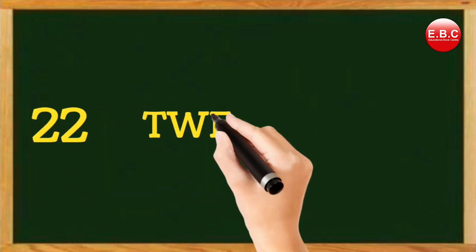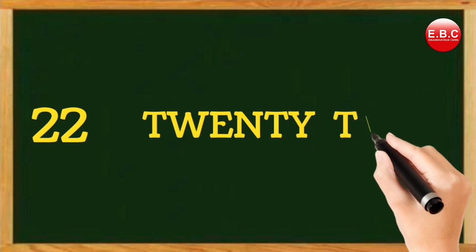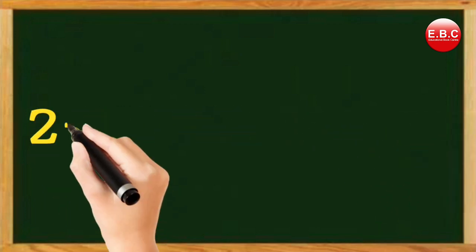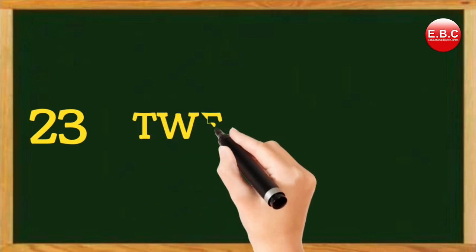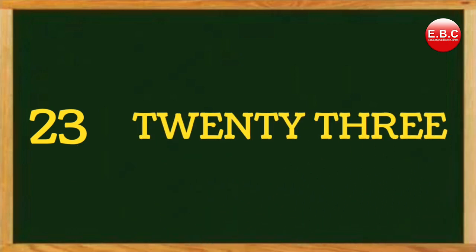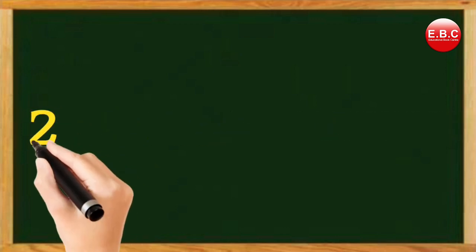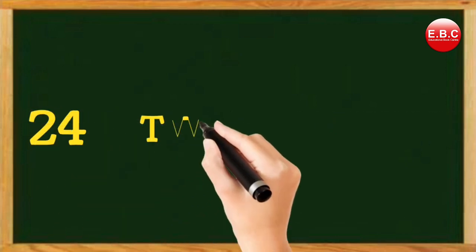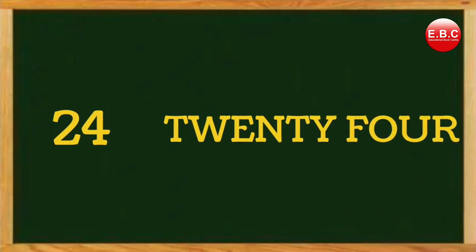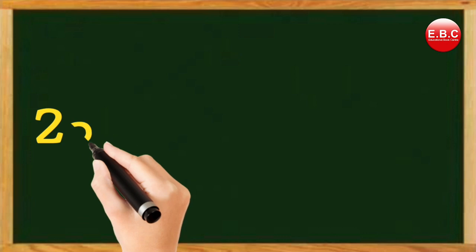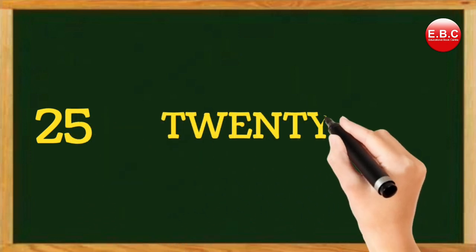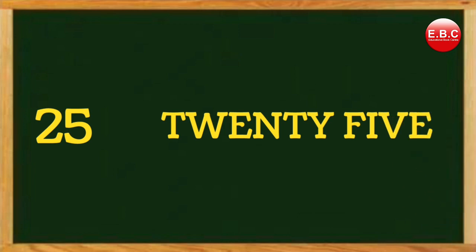22 — T-W-E-N-T-Y, twenty, T-W-O, two. 22. 23 — T-W-E-N-T-Y, twenty, T-H-R-E-E, three. 23. 24 — T-W-E-N-T-Y, twenty, F-O-U-R, four. 24.